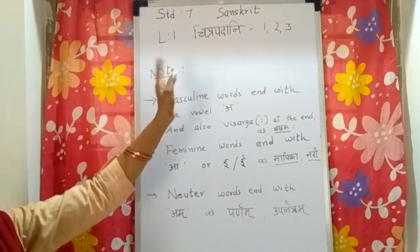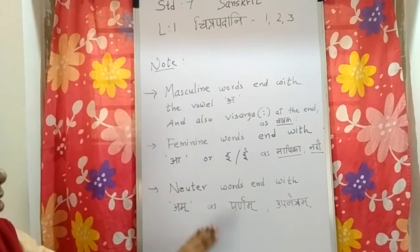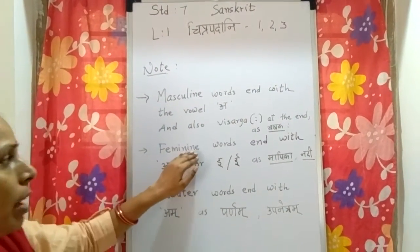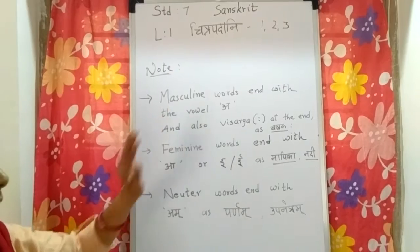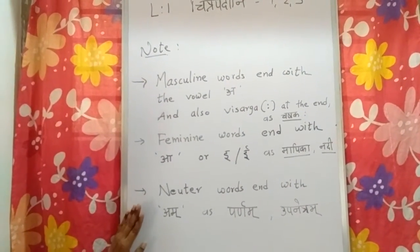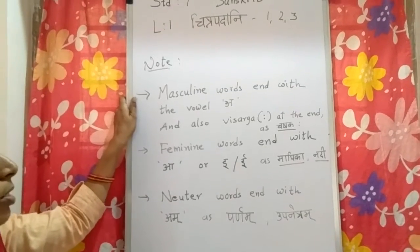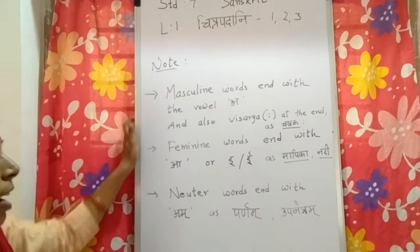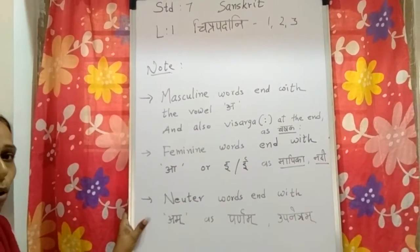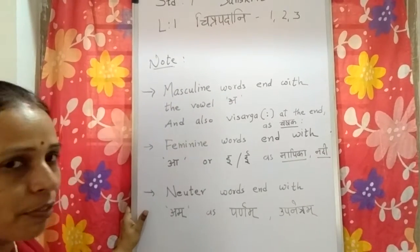In Chitrapadhani 1 there are masculine words. In Chitrapadhani 2 there are feminine words. And in Chitrapadhani 3 there are neuter words. We learnt all the masculine, feminine and neuter words, and I hope you have revised all the words.